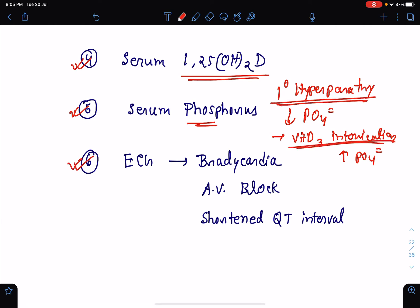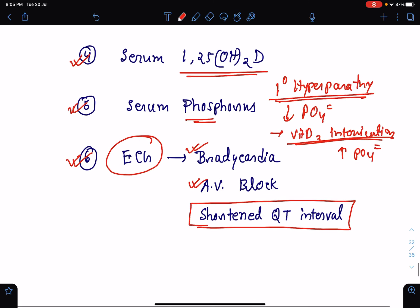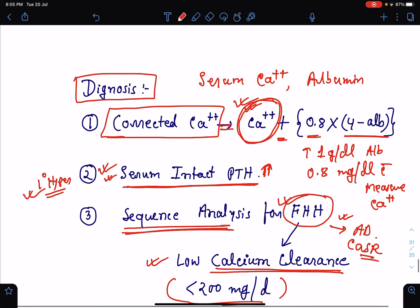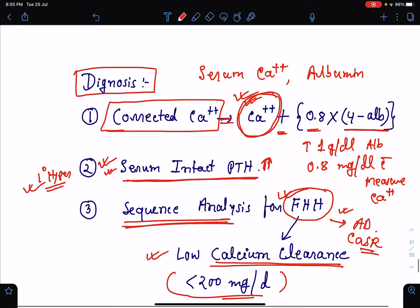Very importantly, we need to look for ECG also. There are certain very important ECG findings in case of hypercalcemia. There may be severe bradycardia, AV nodal block and very importantly, there will be short QT interval. These are the few investigations which we will be doing to find out the actual cause of hypercalcemia.